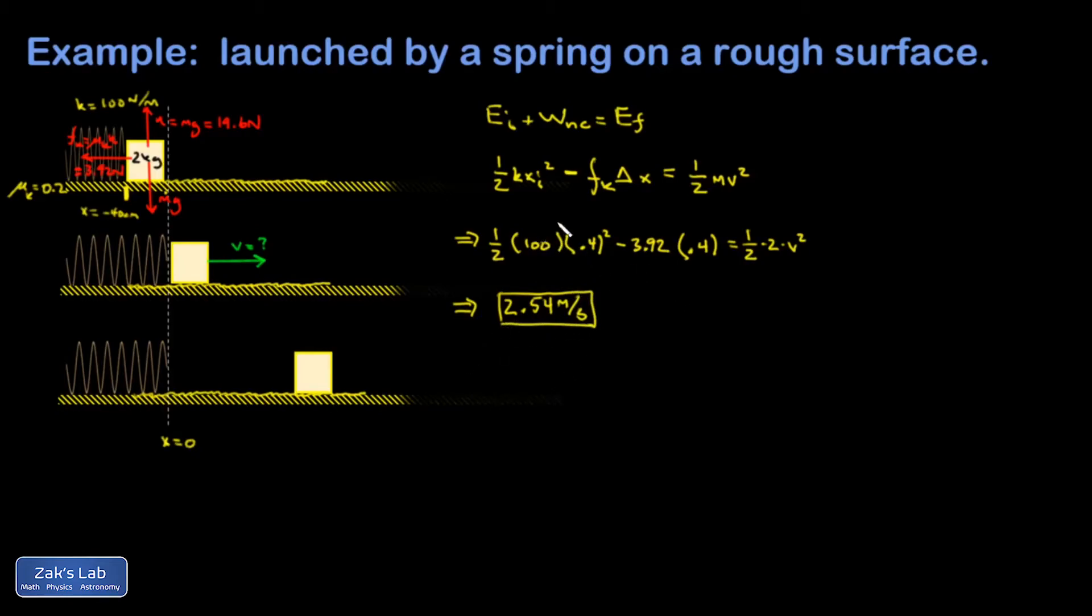So after I smash these numbers, I arrive at a final speed of 2.54 meters per second. So to smash those numbers, I would just combine everything on the left side in the calculator. Those 2s cancelled. Take the square root of that number, and you've got V. That's the first question.